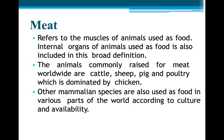What is meat? Meat refers to the muscles of animals used as food. Internal organs of animals used as food are also defined under this broad term. The animals commonly raised for meat worldwide are cattle, sheep, pigs, and poultry birds, which is dominated by chicken. Other mammalian species are also used as food in various parts of the world according to culture and availability.